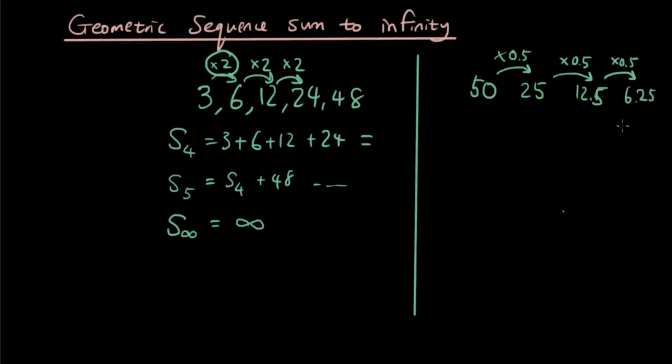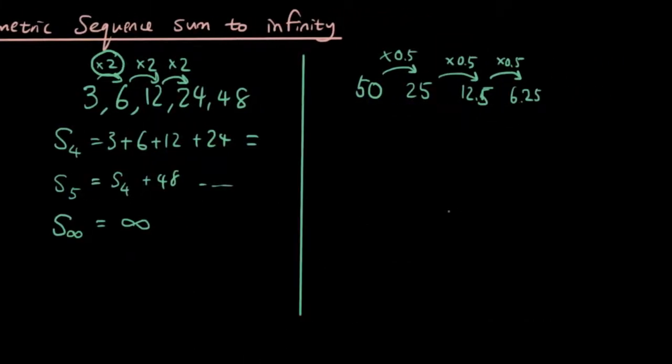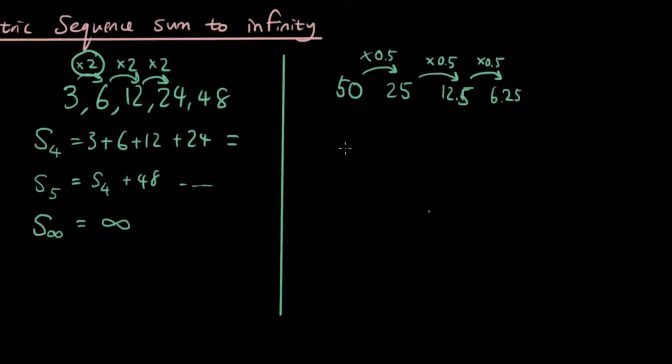So you can see here the terms are getting smaller and smaller. And in this case, we can actually find the sum to infinity. Because as the numbers will get smaller and smaller, when we add up all the terms together to infinity, it approaches a certain number. And there's a formula that we can use to find the sum to infinity.